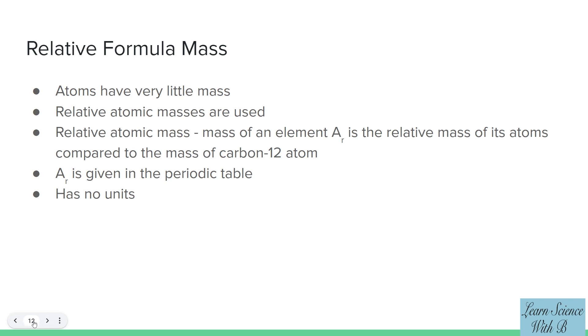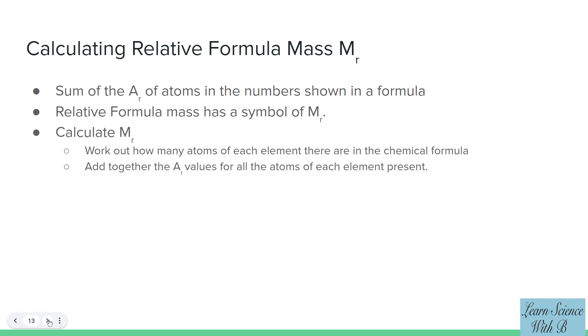Calculating relative formula mass: The relative formula mass of a substance made up of molecules is the sum of the relative atomic masses of the atoms in the numbers shown in the formula. Relative formula mass has the symbol MR. To calculate the MR for a substance, work out how many atoms of each element there are in the chemical formula. Add together the AR values for all the atoms of each element present.